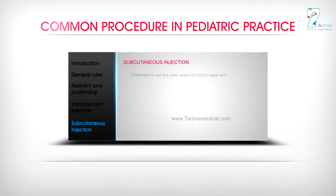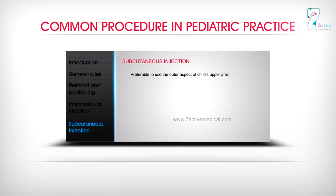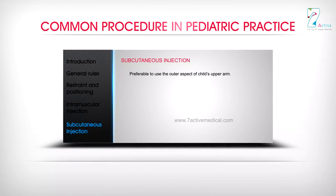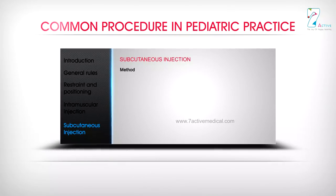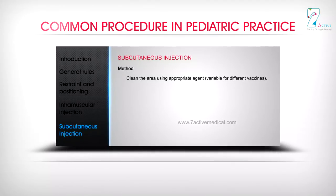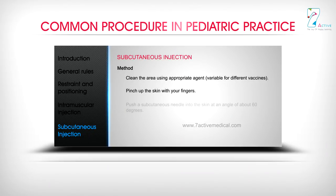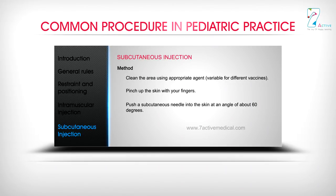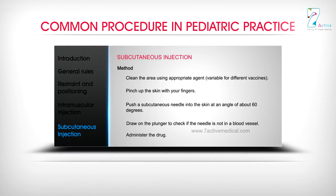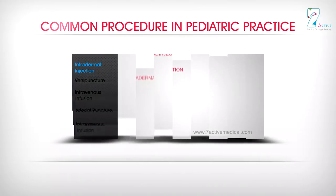Subcutaneous injection: Preferable to use the outer aspect of the child's upper arm. Method: Clean the area using the appropriate agent, which is variable for different vaccines. Pinch up the skin with your fingers. Push a subcutaneous needle into the skin at an angle of about 60 degrees. Draw on the plunger to check that the needle is not in a blood vessel, then administer the drug.